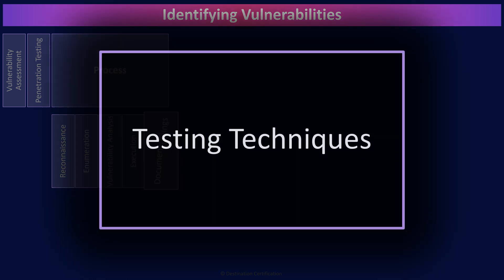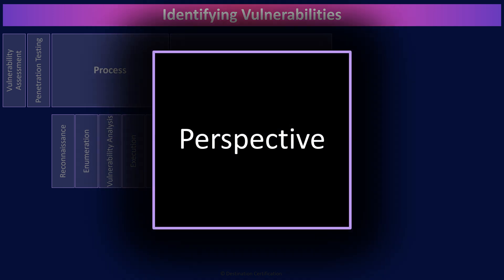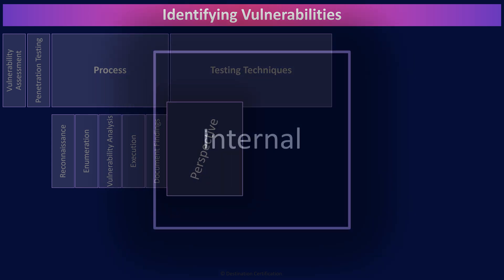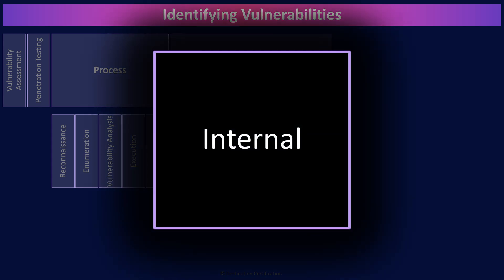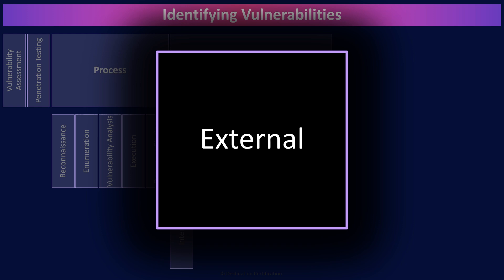Now let's go through some testing techniques that we can use. We can mix and match these different techniques to achieve different types of tests — simulating an outsider hacker or a malicious insider, for example. Perspective is about where the ethical hacker, the assessor, is performing the test from. Internal means testing is performed from within the organization's network, simulating the attacker being inside the network. External means testing is performed from outside the organization's network, simulating the attacker being outside the firewall, typically out on the internet.